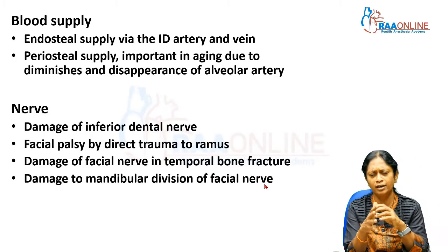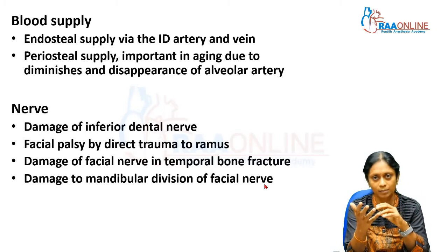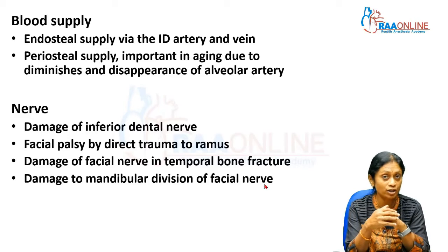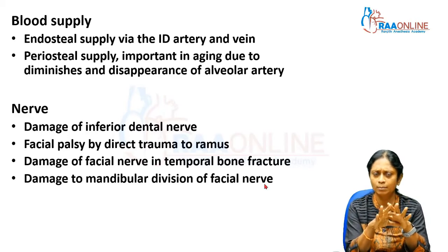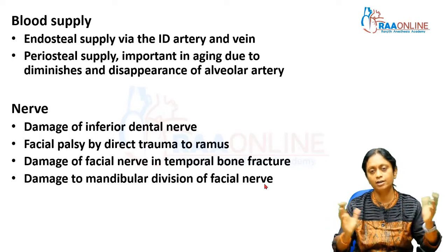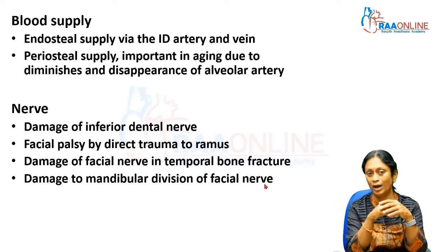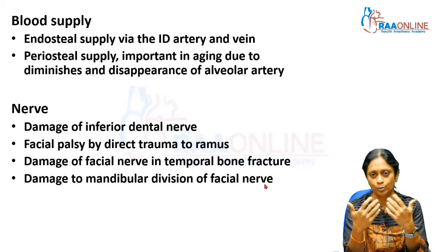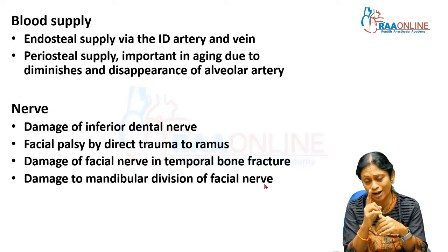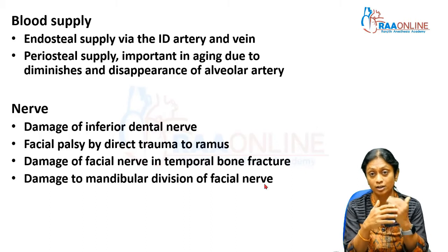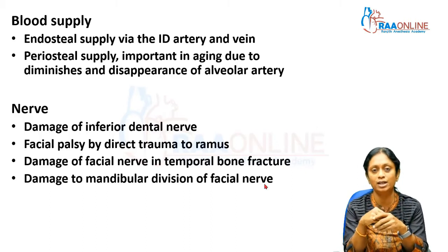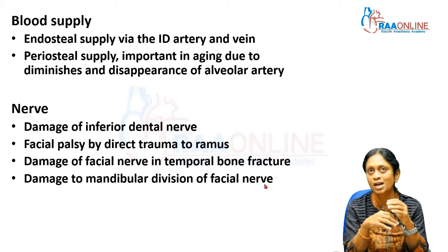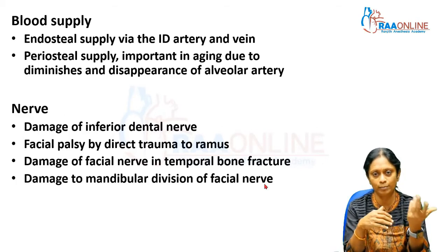The blood supply to the mandible comes primarily from the endosteal blood supply, which is the inferior alveolar artery and its vessels. There is also a periosteal blood supply covering the entire mandible, which diminishes as we age. This actually compensates for the endosteal supply, which also reduces as aging progresses. The nerve supply is obviously the inferior alveolar nerve, which is part of the mandibular nerve.